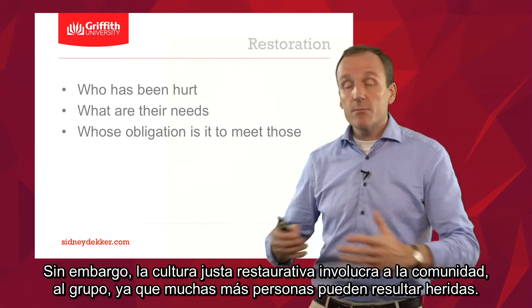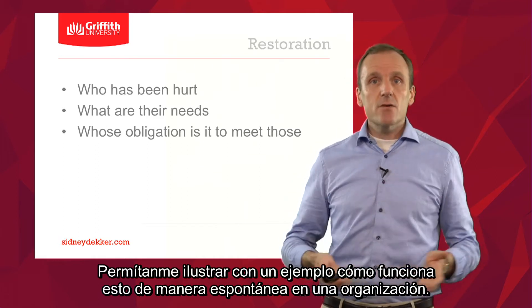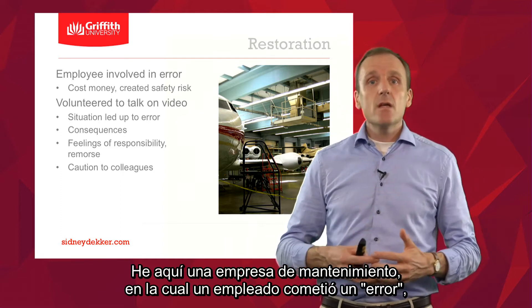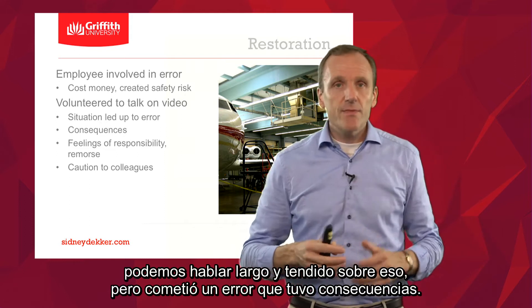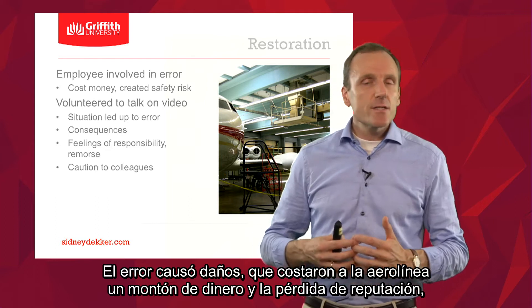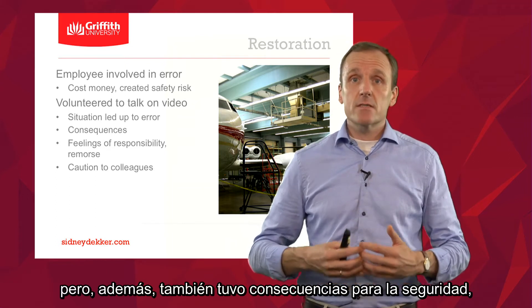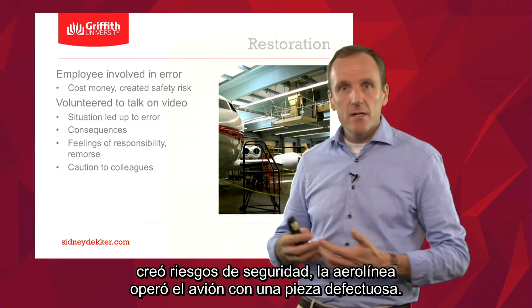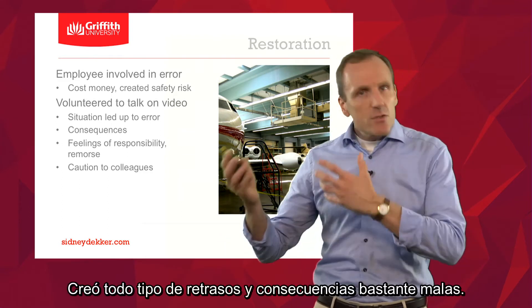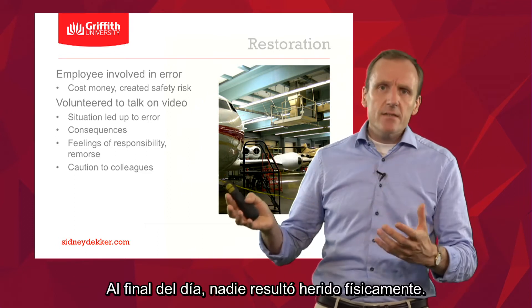This restorative approach involves the community because lots of people may be hurt. Let me illustrate how that works spontaneously in an organization. Here's a maintenance organization in which an employee made an error — an error that had consequences, that had bite. It cost the airline a lot of money and some reputational face, but it also had safety consequences. It created safety risk. The airline dispatched the airplane with a faulty part in it, resulting in delays and other bad consequences. At the end of the day, nobody got physically hurt.